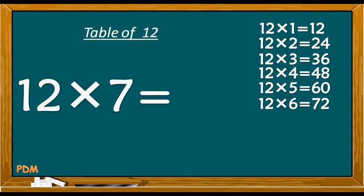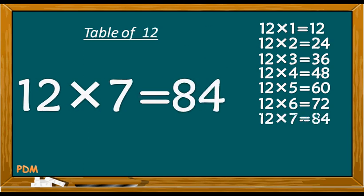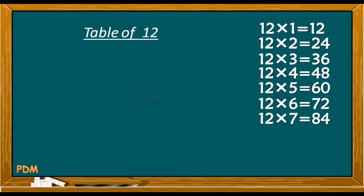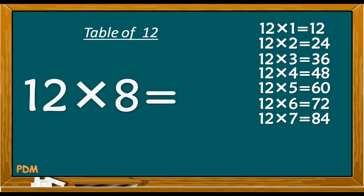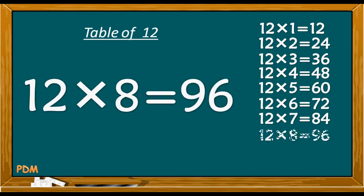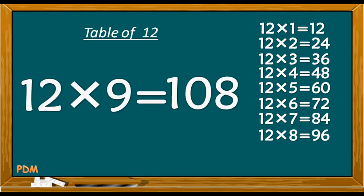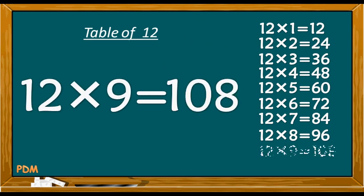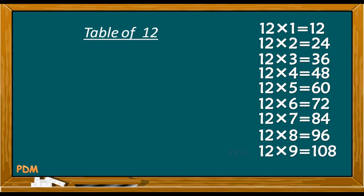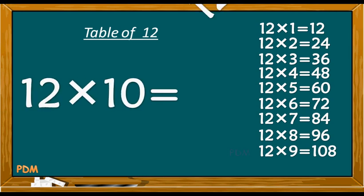Twelve sevens are eighty-four. Twelve eights are ninety-six. Twelve nines are one hundred and eight. Twelve tens are one hundred and twenty.